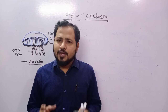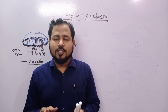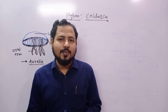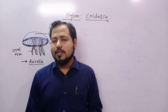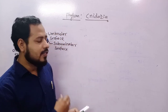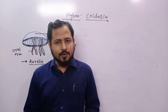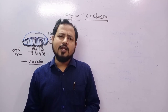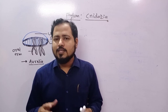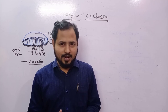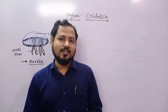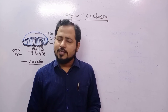Cnidarians show two different forms: polypoid — pole-like erect animals, example Hydra — and medusoid — umbrella-shaped, like jellyfish Aurelia and Physalia. Both asexual reproduction by budding and regeneration and sexual reproduction by gamete formation are found. Most members are bisexual.